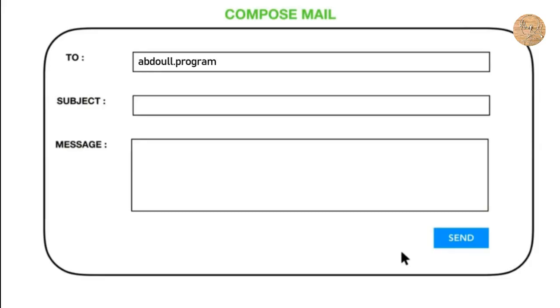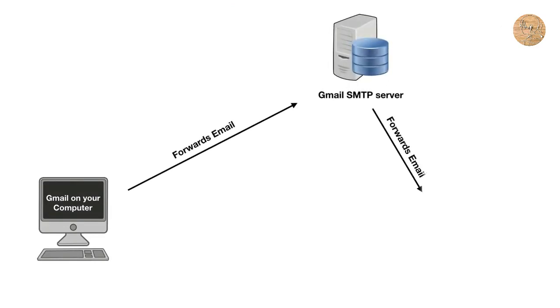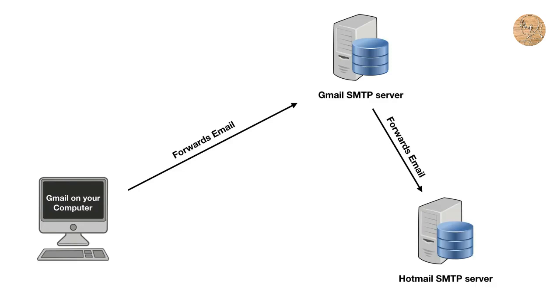Let me explain how the spammer actually does this. Email works on SMTP, which stands for Simple Mail Transfer Protocol. When you are writing an email, you put in the subject, the message, any attachments, and the recipient's mail ID. Once you click the send button, the client — which in my case is Gmail — is going to forward this email to the SMTP server of Gmail, and the email needs to be converted to a particular format so that the SMTP server can understand where to forward it.